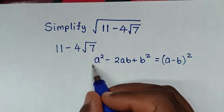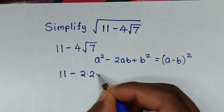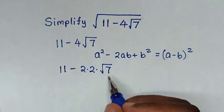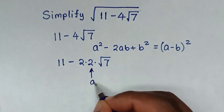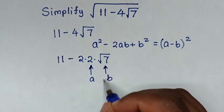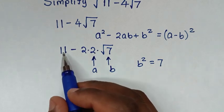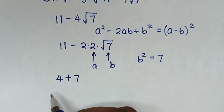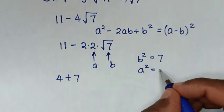For this expression to be in that form, it will be 11 then minus 4 — where 4 is the same as 2 times 2 — then times square root of 7. When we compare, negative 2 times 2 times square root of 7 is the same as negative 2ab. So here, a is 2 and b is square root of 7. Then if b is square root of 7, then b squared equals 7. Next, 11 is the same as 4 plus 7, where a is 2 so a squared equals 4.